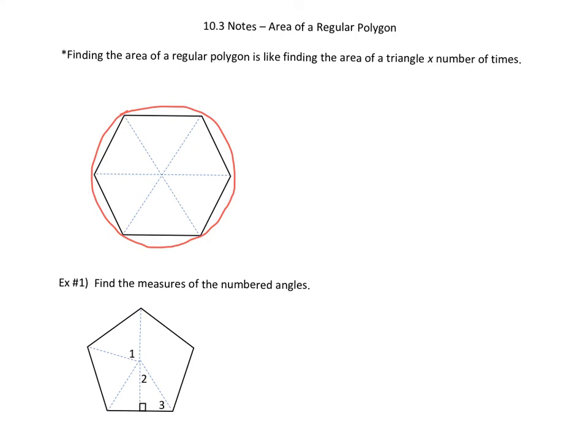So what we can do, if I draw in all these dotted lines that you see, I get six triangles that are all identical. Do you see that? So what you could do is you could find the area of those six triangles, find one triangle, multiply by six, and you'll have the area of the whole figure.